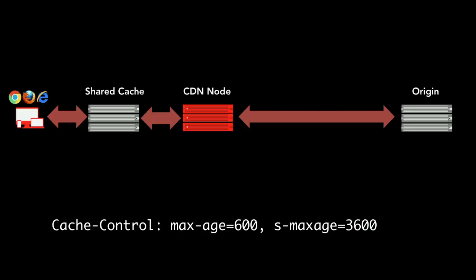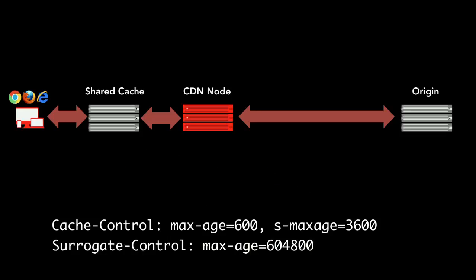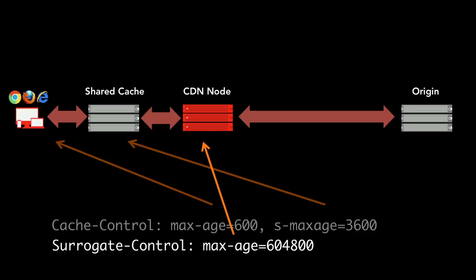Sometimes you have another shared cache — a corporate cache, a middle-box cache — sitting upstream from a CDN, and maybe you want to direct them all to cache differently. The spec doesn't give us a mechanism for that, but there is a second header. What S-maxage does is direct both the CDN node and the shared cache to cache things the same way. If you want that to be more granular, there's a second header called surrogate-control, which isn't standard but many CDNs implement it. For a while, CDN caches or reverse proxies were known as surrogates, which is why this header is called surrogate-control.